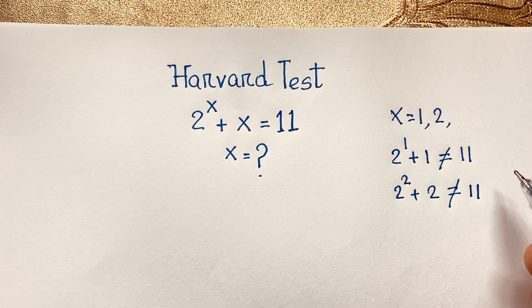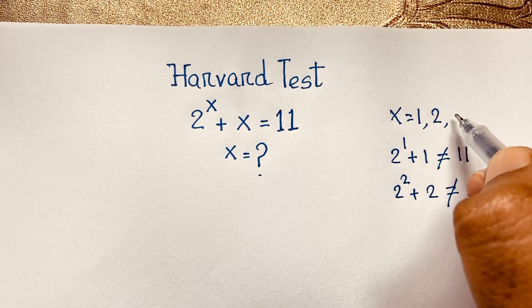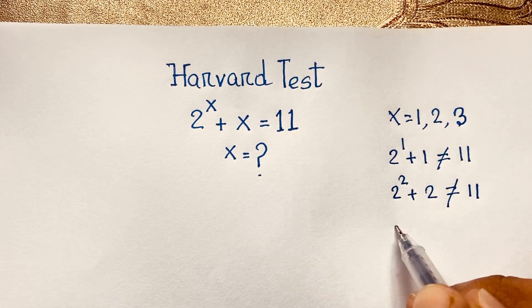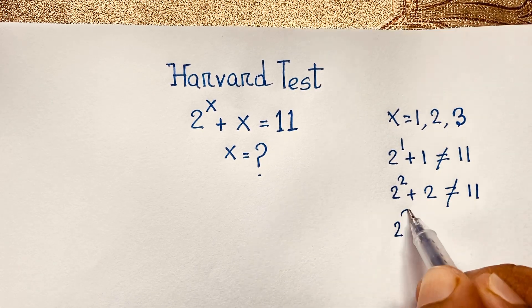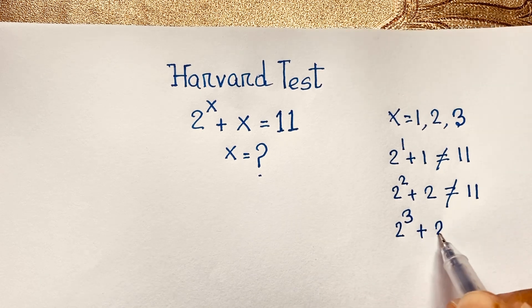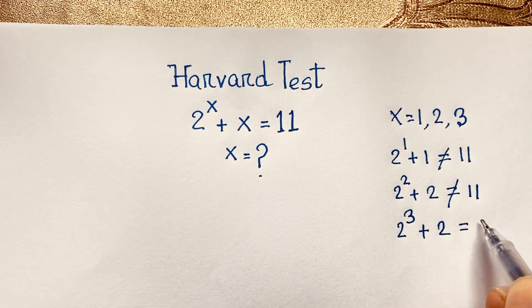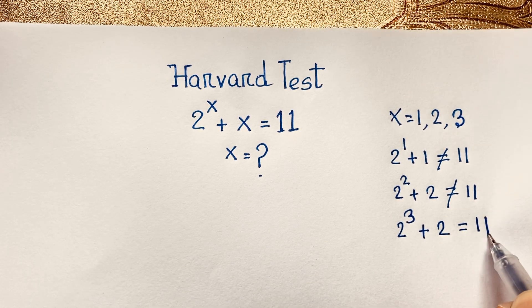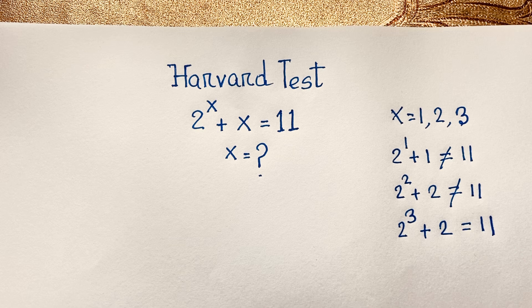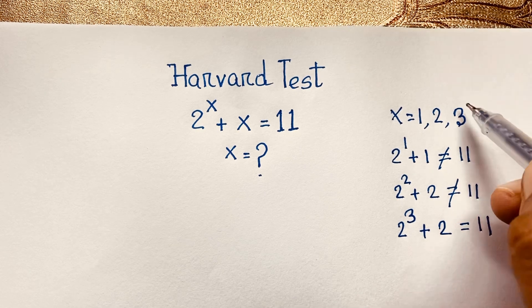But if you think x is equal to 3, then 2 to the power of 3 is 8, and 8 plus 3 is 11, so both sides are equal. So you can see x is equal to 3 — this is our final answer.